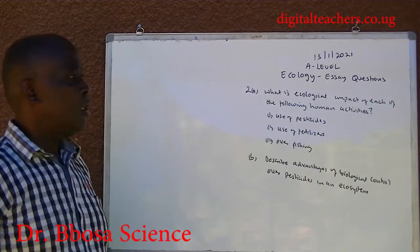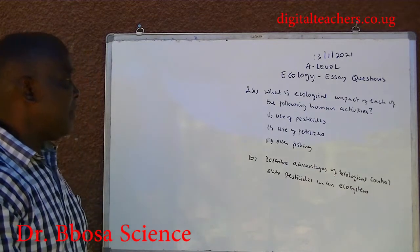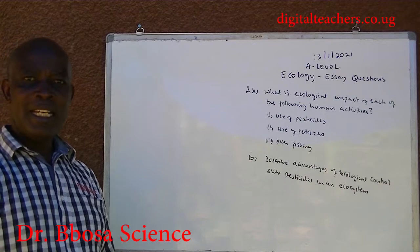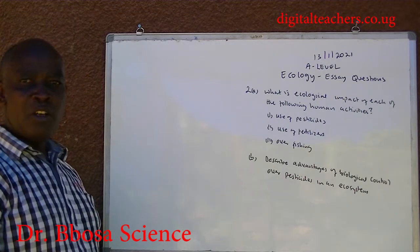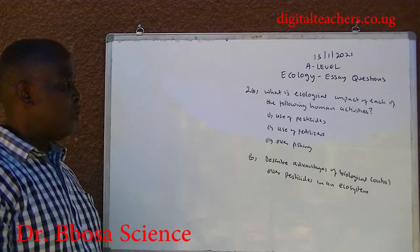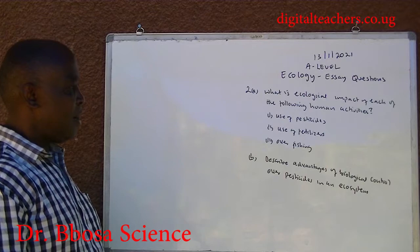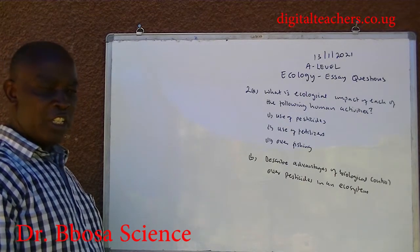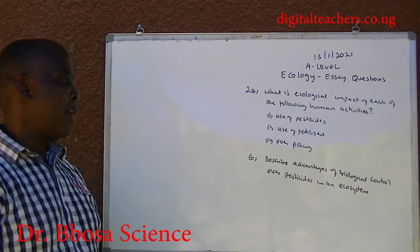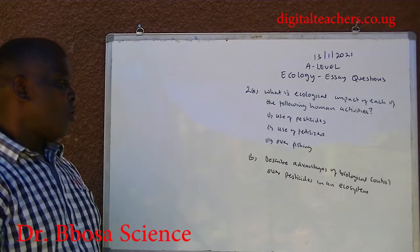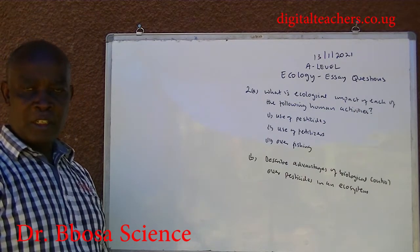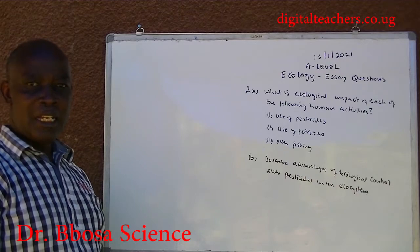Number 2a: What is the ecological impact of each of the following human activities? Number 1: use of pesticides. Number 2: use of fertilizers. Number 3: overfishing. B: Describe advantages of biological control over pesticides in any ecosystem. You can pause and answer.